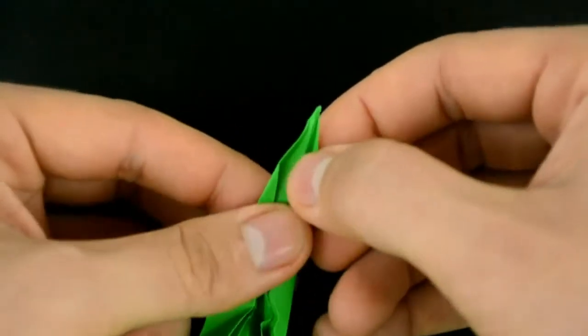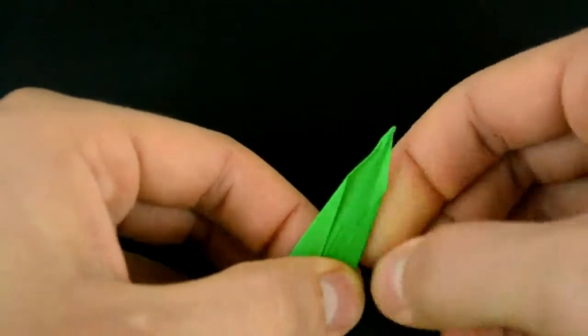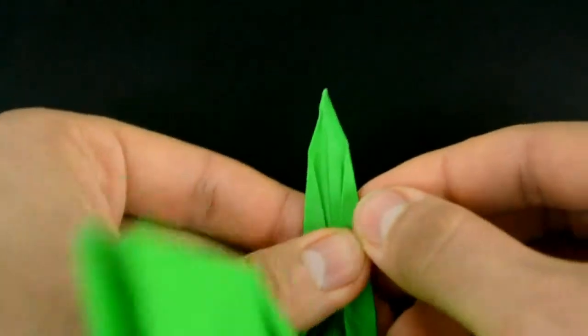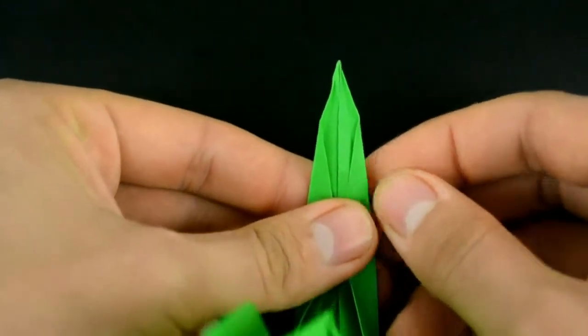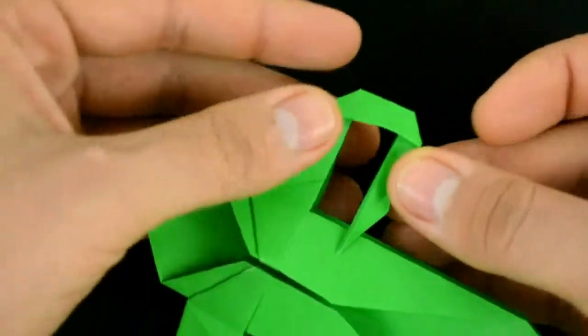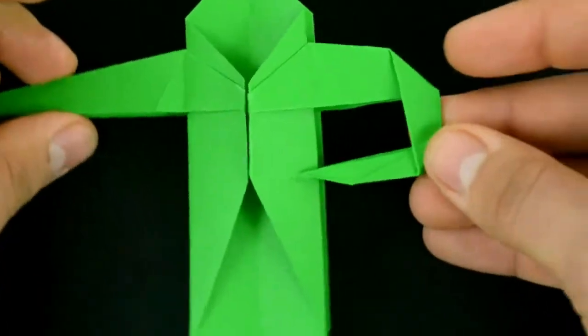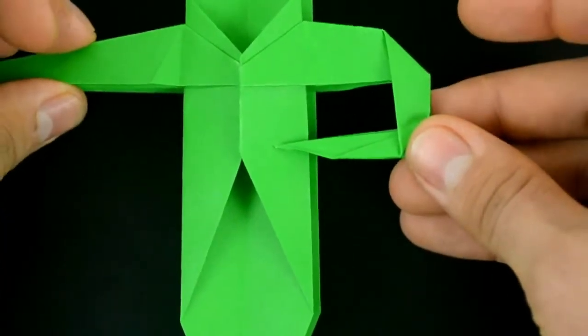The other one as well. And redo the previous fold, the reverse fold. Now fit this tip inside the main flaps of the origami and organize a little.